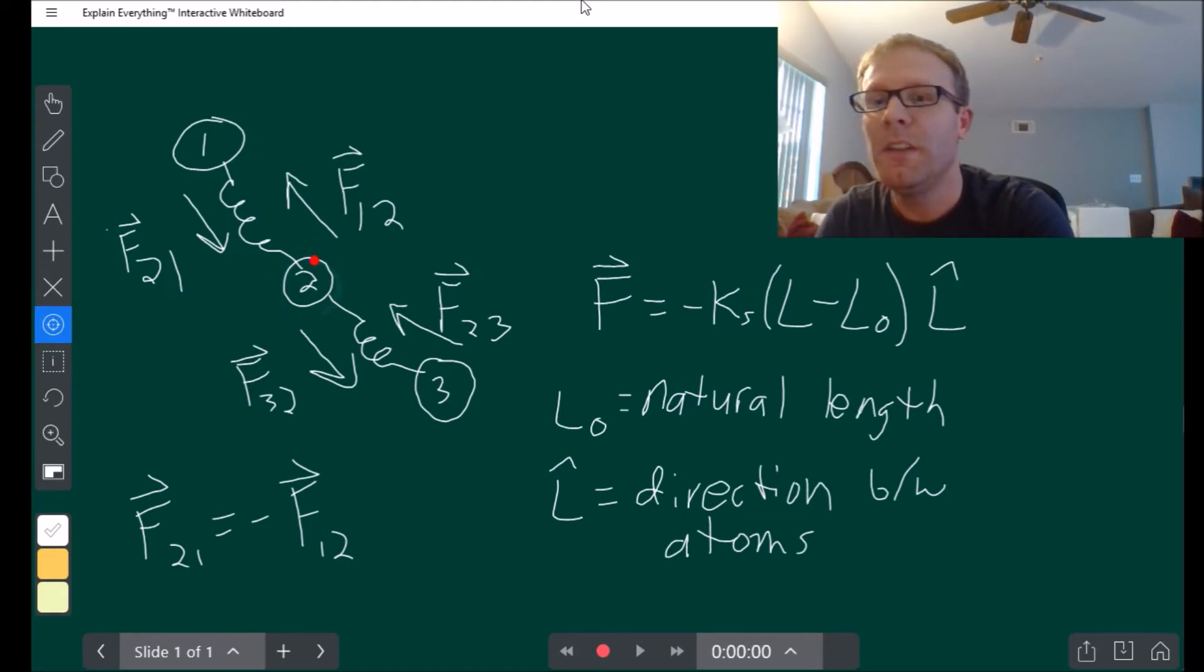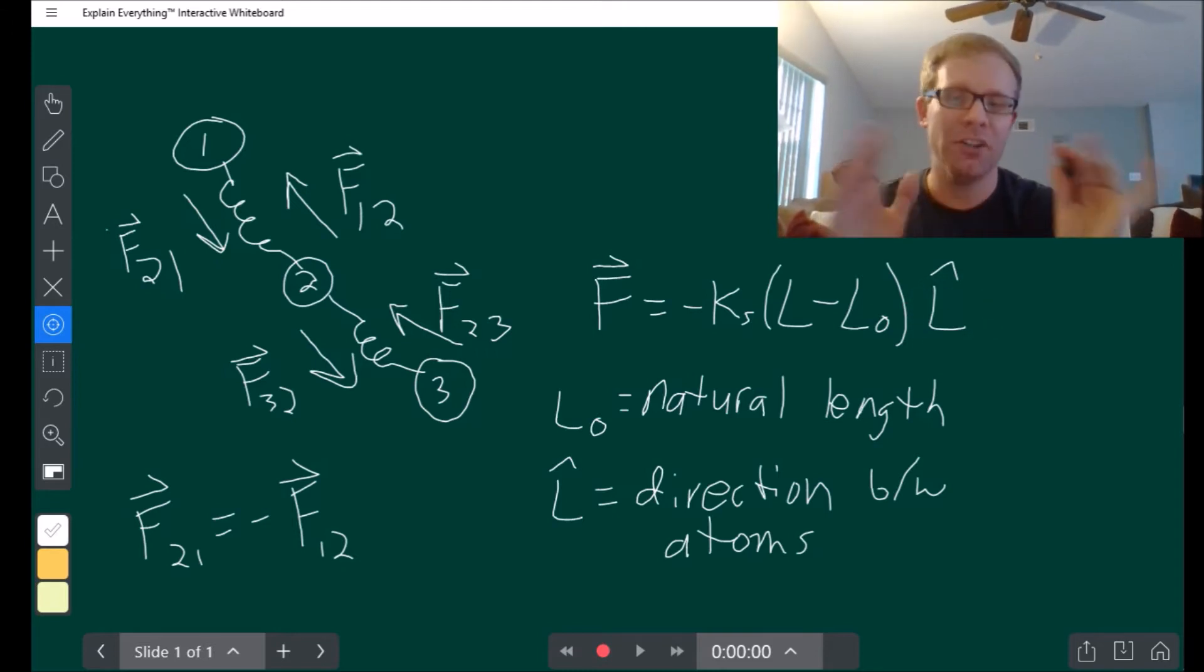So, for example, atom two, the one in the middle is going to experience both of these two forces. It's going to experience the force from one and it's going to experience the force from three, whereas the one at the bottom is only going to experience this force going this way. This one's only going to experience this force going this way. This L hat here, this direction of the force, is going to vary based on the two springs. You can see I've got this one at a little bit more of a vertical angle. This one's coming out a little bit more horizontally. So this L hat also changes depending on the angle that the spring is made.